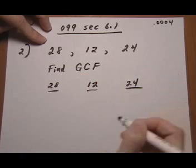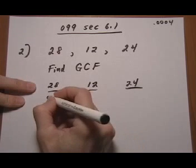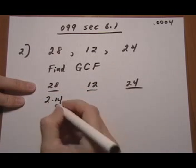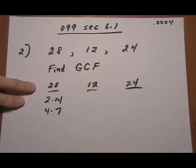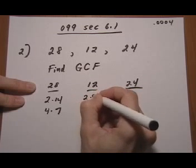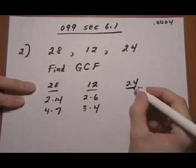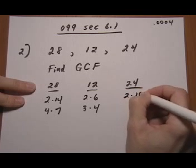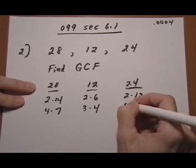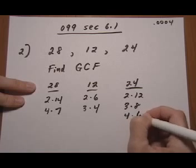So let's list the different factorings. Twenty-eight could be two times fourteen, or four times seven. Twelve could be two times six, or three times four. And twenty-four could be two times twelve, three times eight, or four times six.